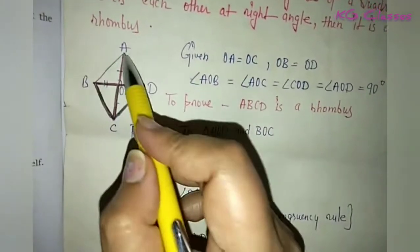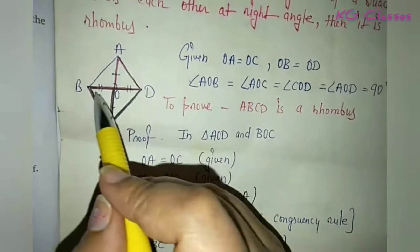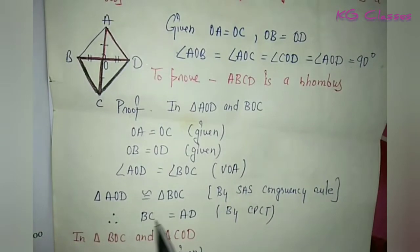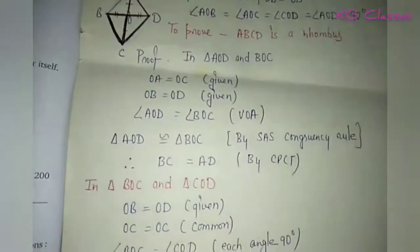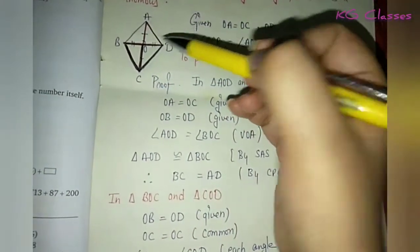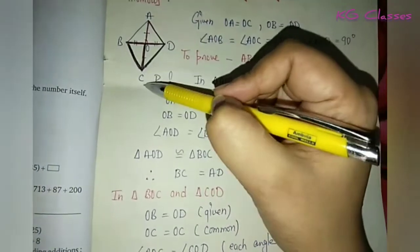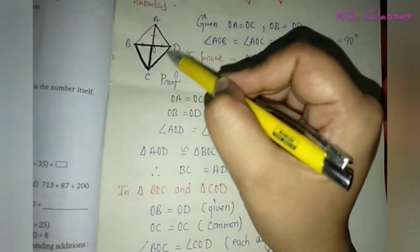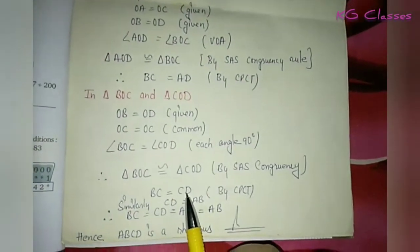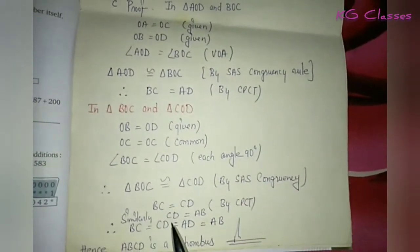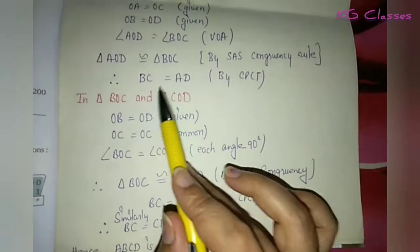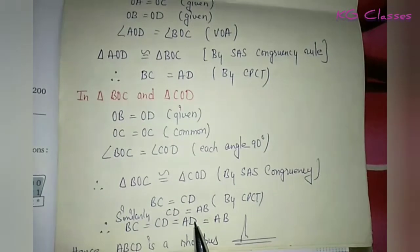So when two triangles are congruent, their corresponding parts are equal — by CPCT. From triangle BOC and triangle COD, we get BC equal to CD. Similarly, we get AD equal to BC. So BC equals CD equals AD, giving us our first and second equations. Similarly, CD equals AB.